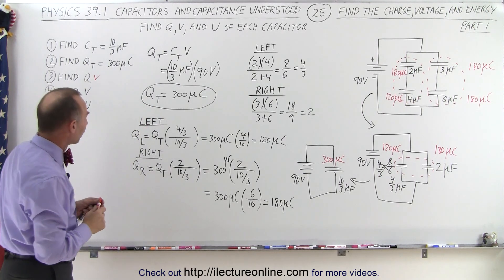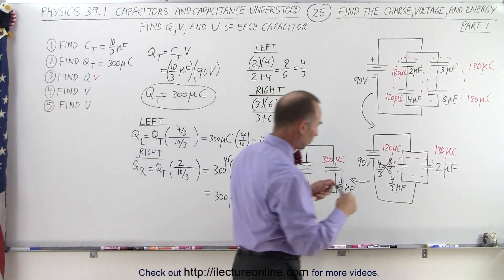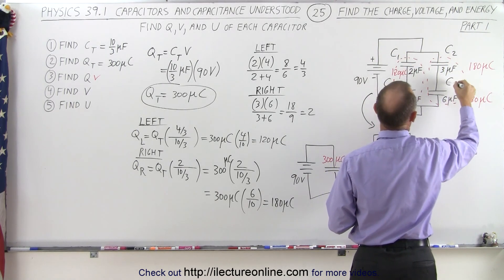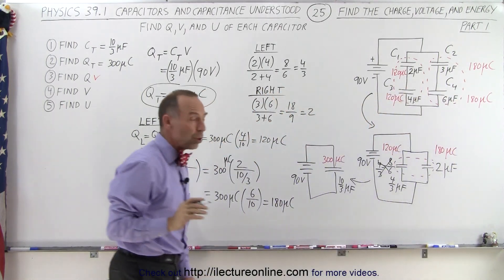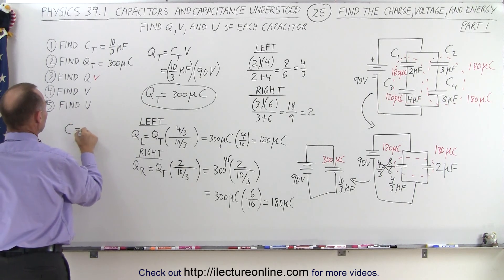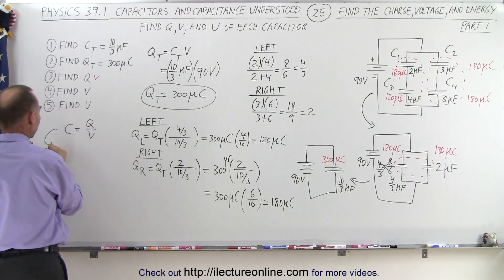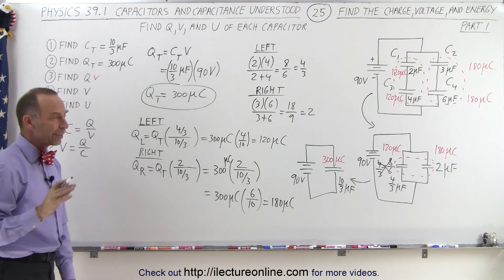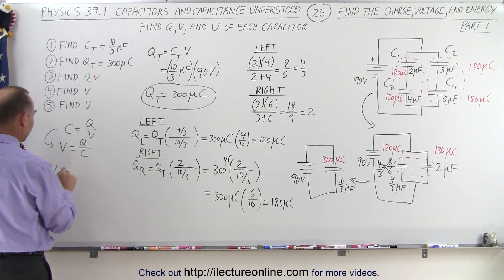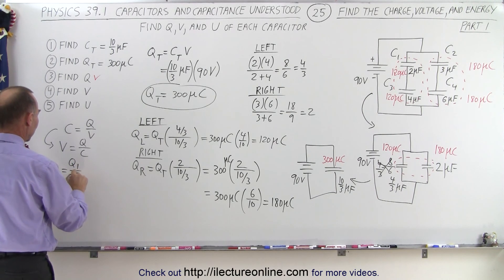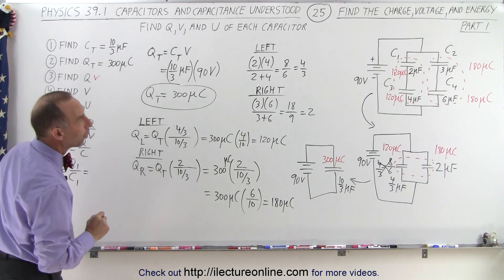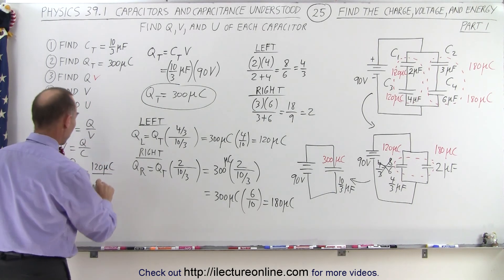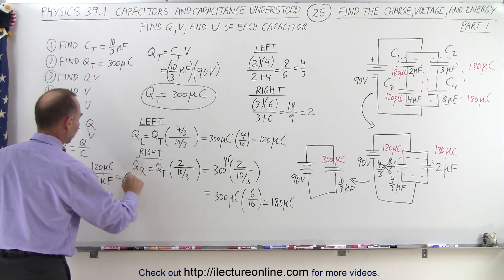Now let's calculate the voltage on each of the capacitors. We'll label them C1, C2, C3, and C4. The definition of capacitance is C equals Q over V, which means voltage equals charge divided by capacitance. The voltage on the first capacitor V1 equals Q1 over C1: that's 120 microcoulombs divided by a capacitance of 2 microfarads, which equals 60 volts.